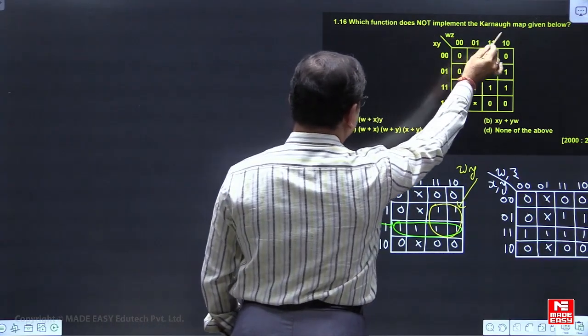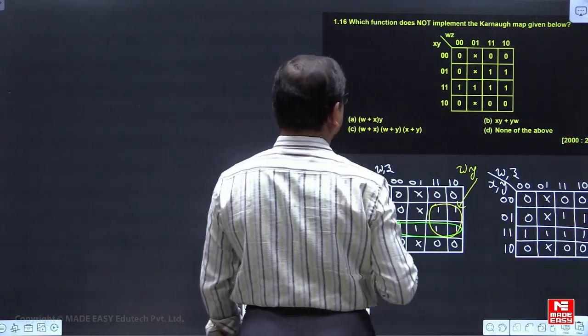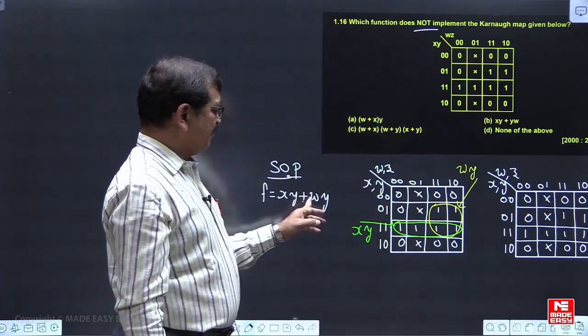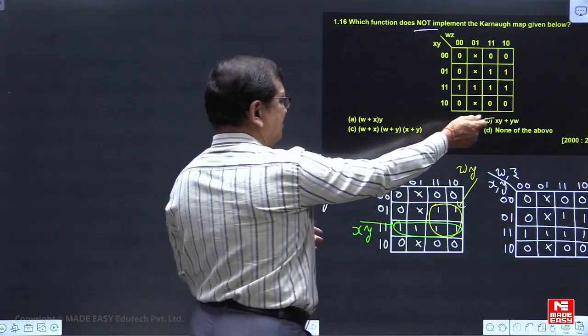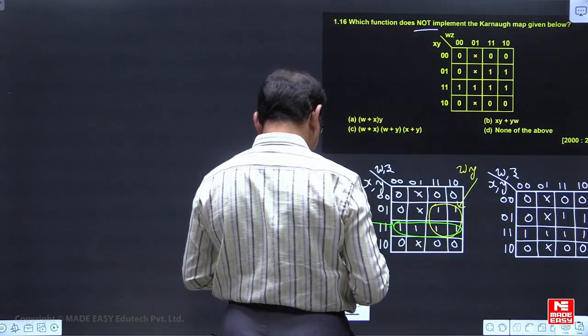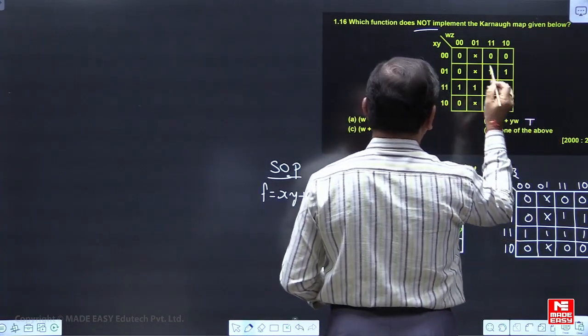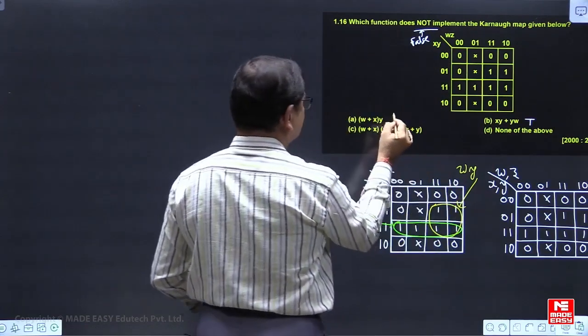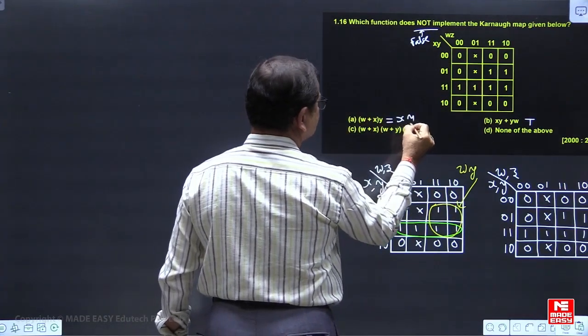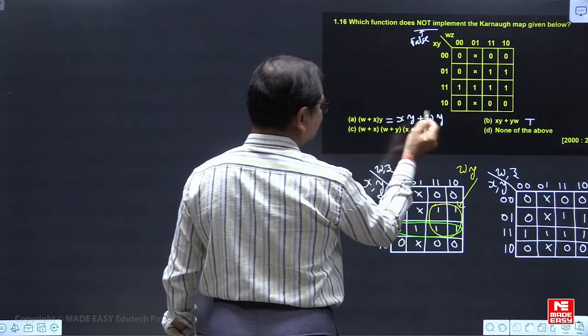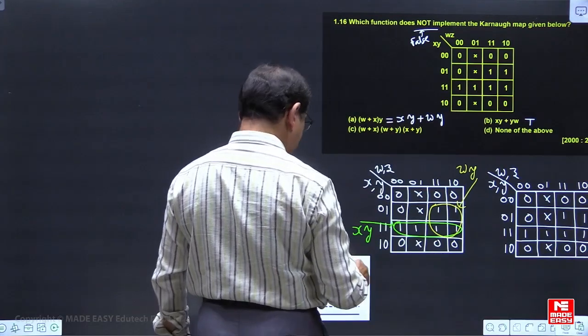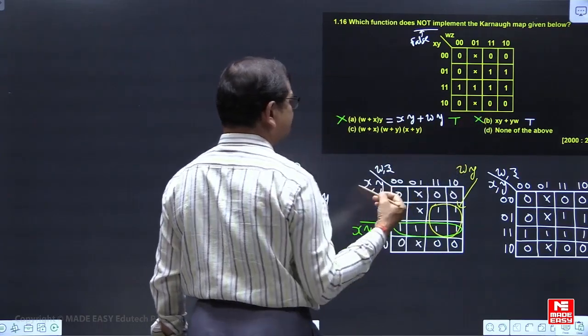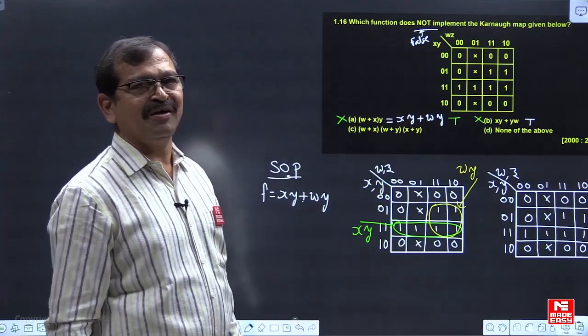So which of the function does not implement? Here the question is which is not implementing among this given A, B, C, Ds. You look here, XY OR with WY. So it is implementing. It is coming to be true. But our answer is supposed to be for false. We need to look at what does not implement. And in this case if you look at A, here also you are looking, it is nothing but XY OR with WY. It is one and same. So this is also coming to be true. So based on this, A and B are not going to be the answers.